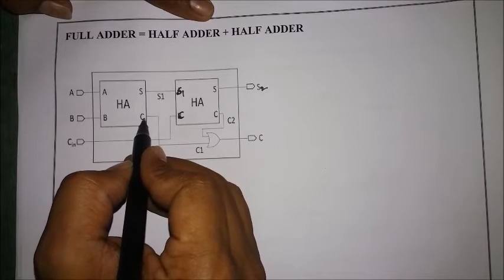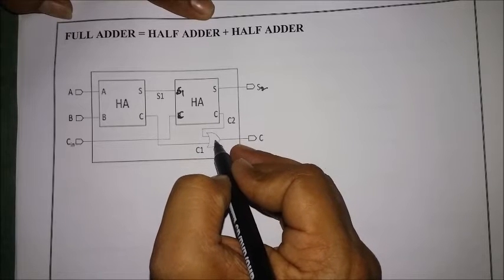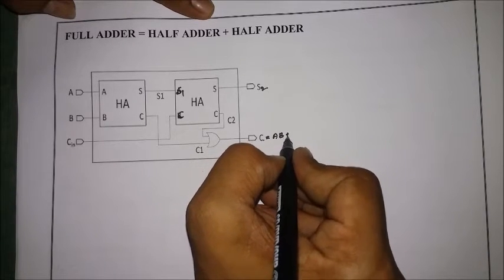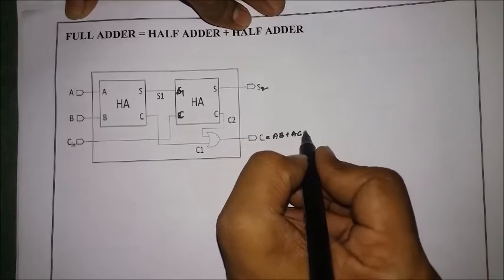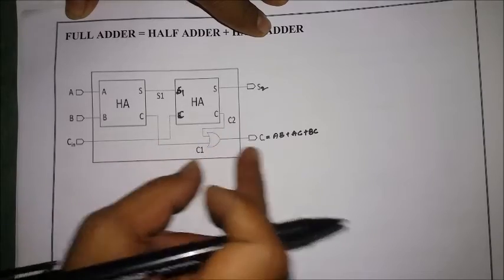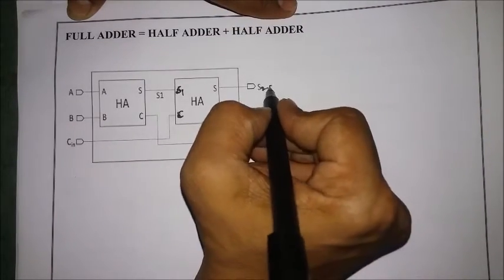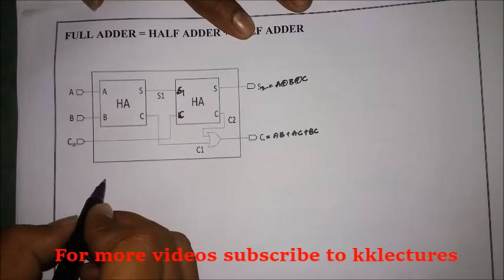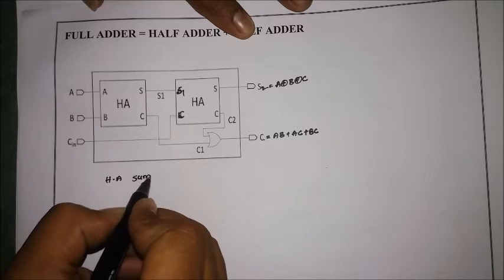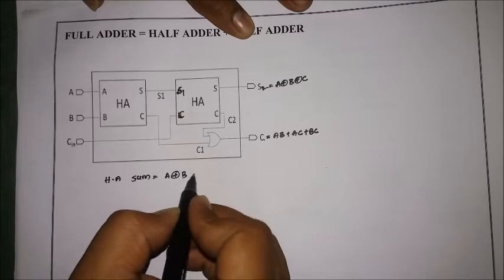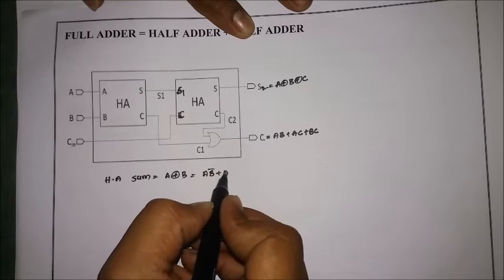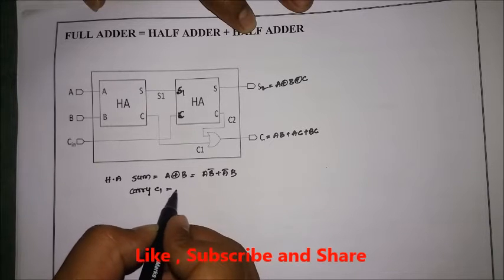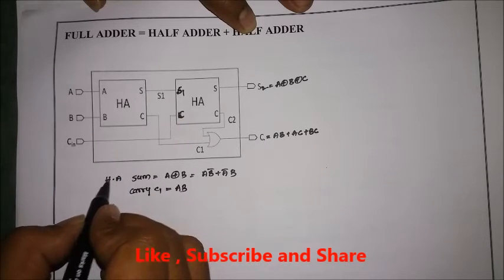The carry generated by the first half adder and the carry generated by the second half adder are given to an OR gate so that I get the full carry. As we know, the carry of a full adder is AB + AC + BC, so I need to prove this. The half adder sum equals A XOR B, which is AB̄ + ĀB, and the first half adder carry C1 equals AB.